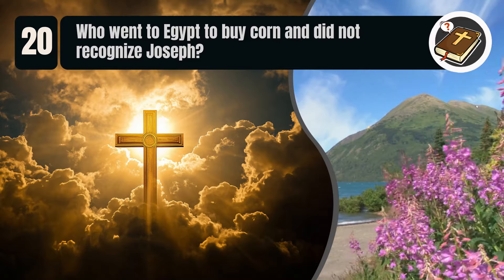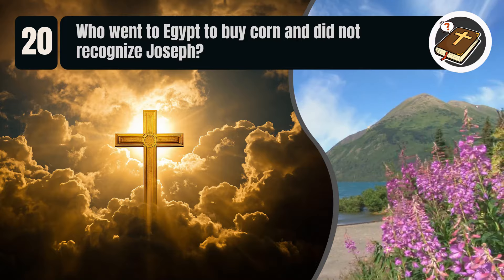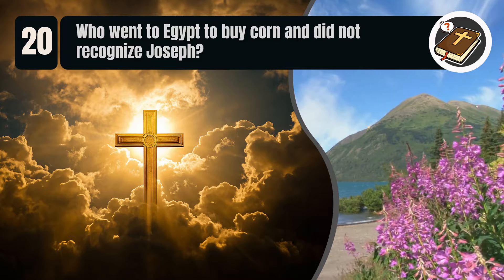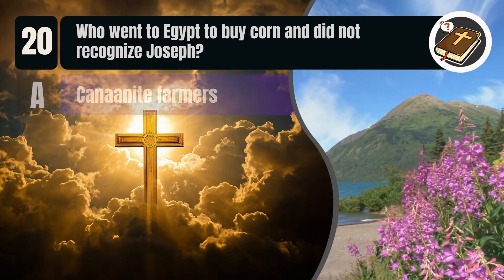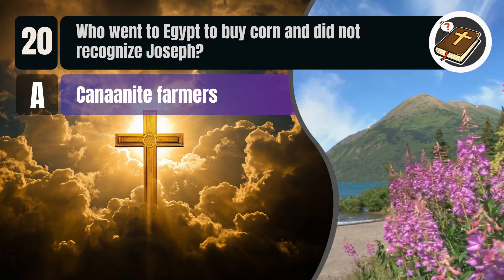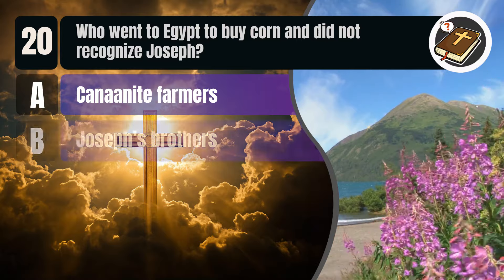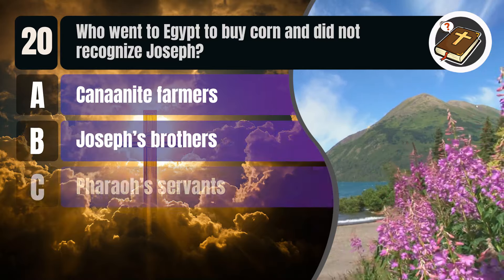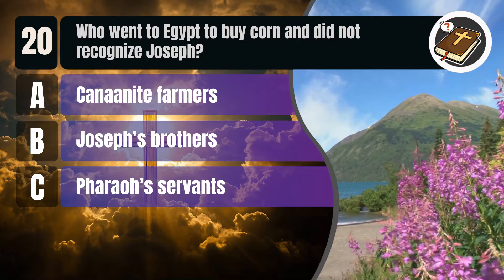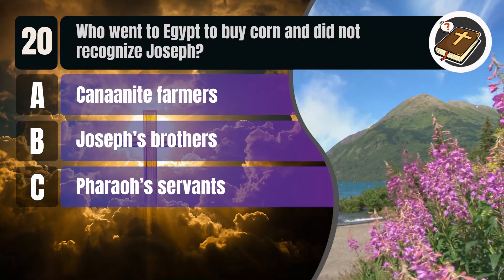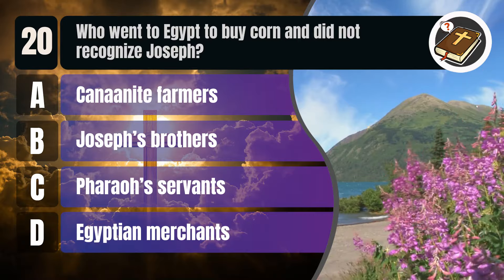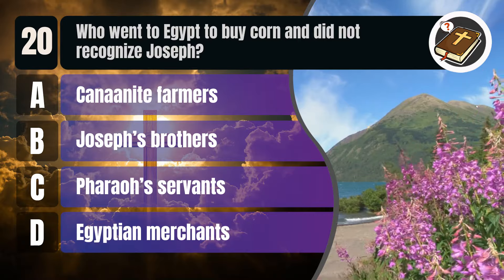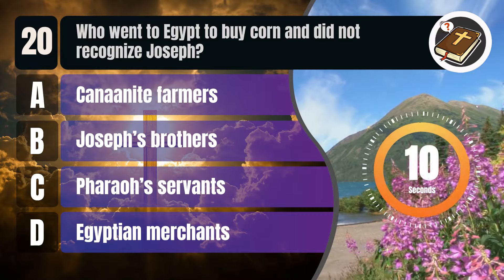Question 20. Who went to Egypt to buy corn and did not recognize Joseph? A. Canaanite farmers. B. Joseph's brothers. C. Pharaoh's servants. D. Egyptian merchants.